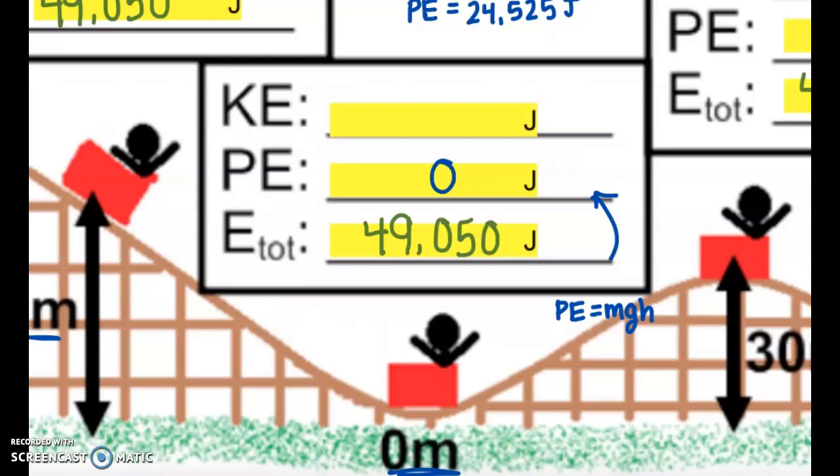Where did all of that lost potential energy go? It simply was transformed into kinetic energy. I must have 49,050 joules of kinetic energy, because I know potential plus kinetic is going to equal my total energy.